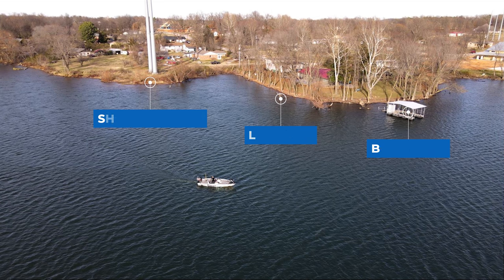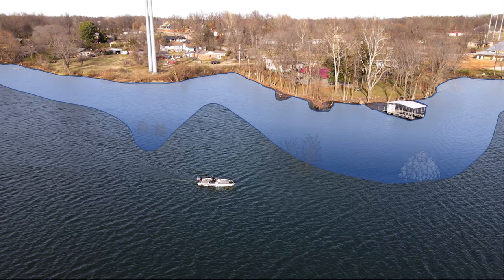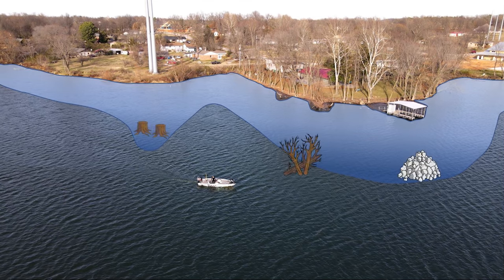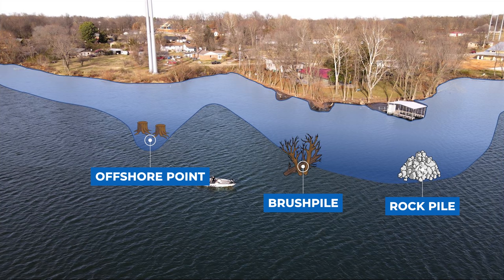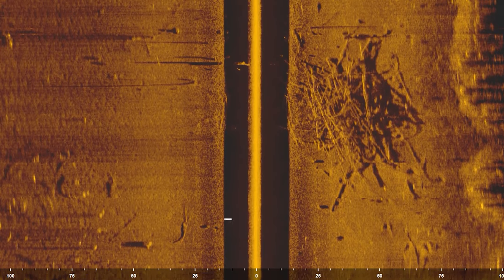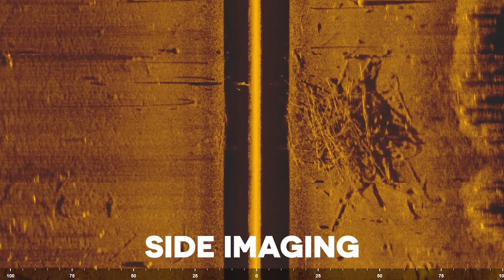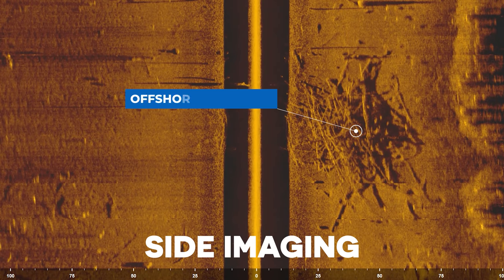These aren't the only targets to hold bass though. There are other targets under the water out in the middle of the lake you can't visually see. This point may extend out into the middle of the lake and drop off into a creek channel, which will be a key place to hold fish, or you may find some offshore cover like a brush pile or a rock pile further off the bank. The way you find these offshore pieces of cover is by using a fish finder, and there's actually a specific view designed to help you find pieces of cover and structure away from the bank — and that's side imaging.